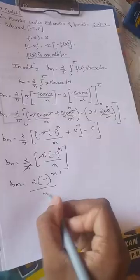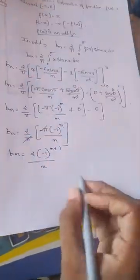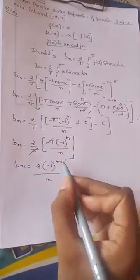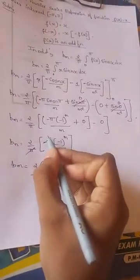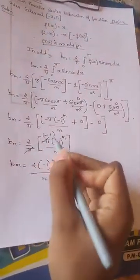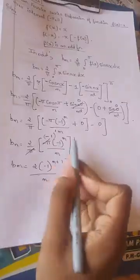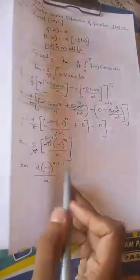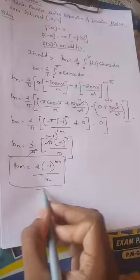This gives 2 times minus 1 to the power n over n, which simplifies to give sin by n. The n plus 1 arises because there is already a minus 1 factor present. Minus 1 to the power 1 times minus 1 to the power n gives minus 1 to the power n plus 1. So this is the final value of bn.